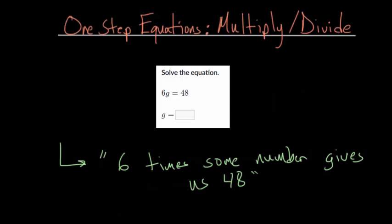And with this interpretation, you might even be able to guess your way to the answer, since we know that 6 times 8 would give us 48. So in this case, you can actually guess that g would in fact be equal to 8.